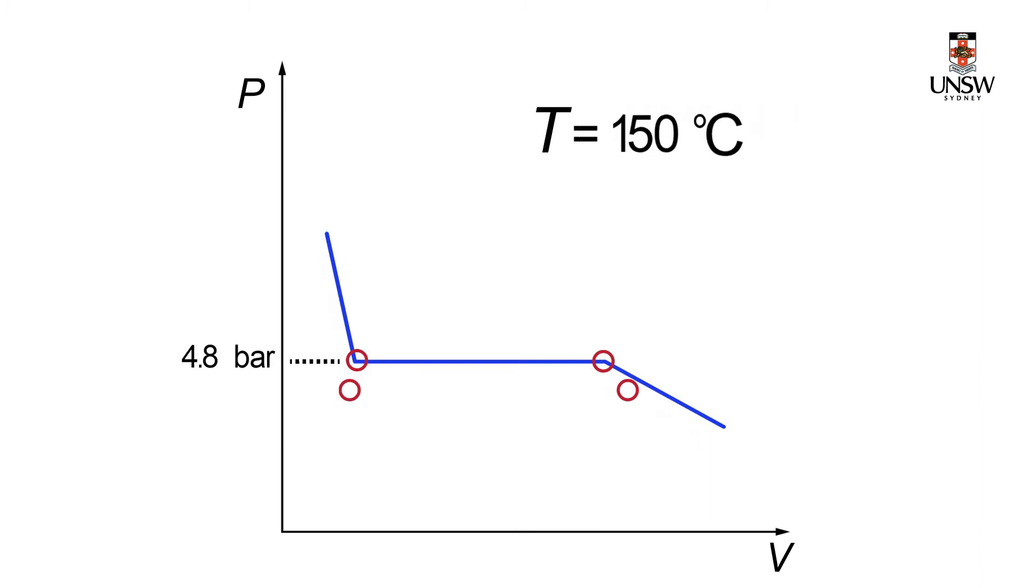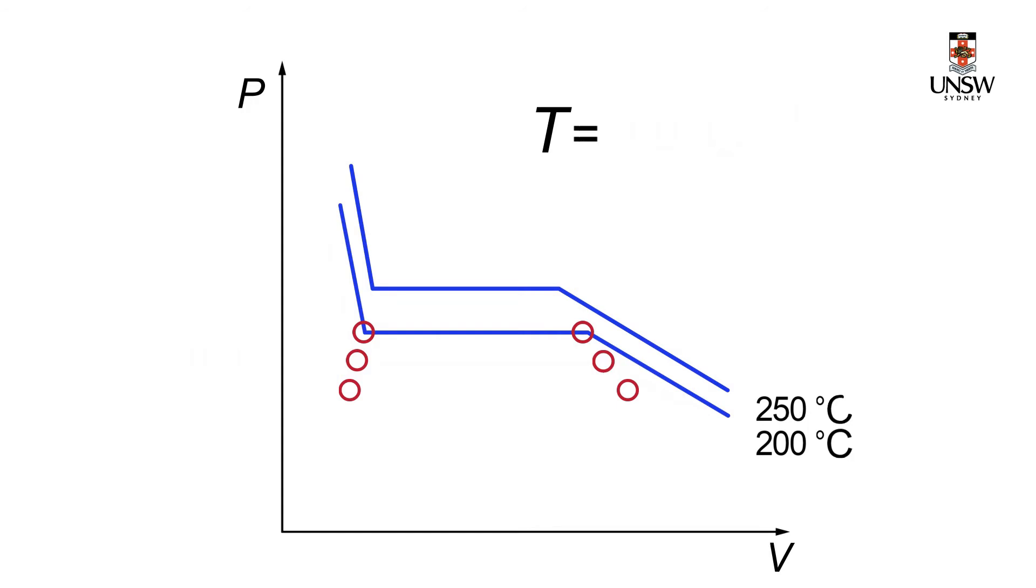We will learn how to find those values later in thermodynamic tables. In the same manner, a number of isothermal lines could be produced, all identifying different saturated temperatures and saturated volumes.